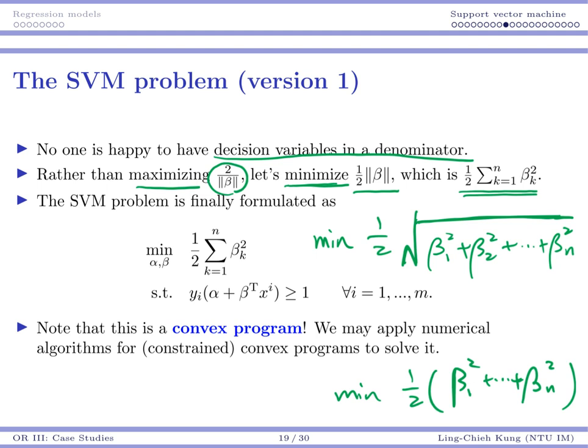If you minimize the square root, pretty much you minimize itself. So why don't we just do this? Let's just minimize 1 half of the sum of square of beta k.